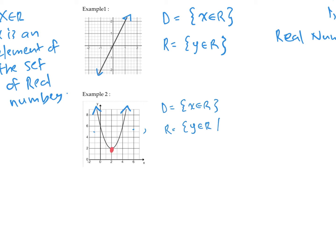This parabola has a lowest point — the vertex — at coordinates 2 and 2. So all the y-values are above this bottom point at 2. We say y is any real number, but with a restriction. So y has to be greater than or equal to 2 — we allow any value for y, but all those values are going to be at least 2 or bigger.